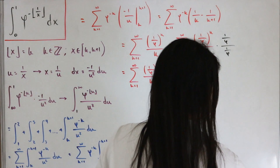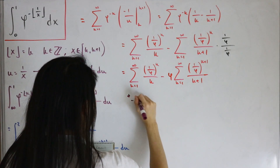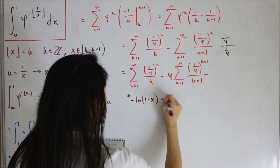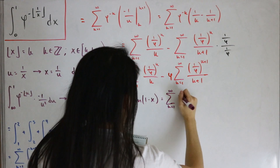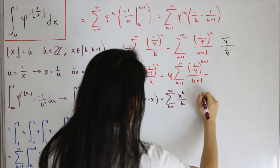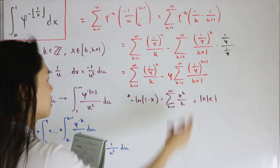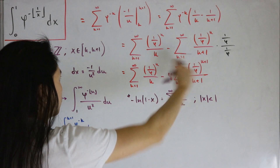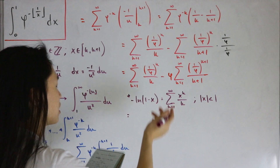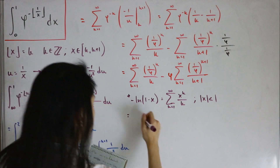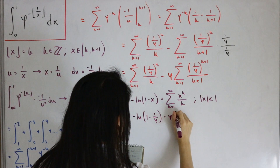The Taylor series we'll use is: -ln(1-x) = the infinite sum from k=1 to infinity of x^k / k, valid for |x| < 1. The input 1/φ does satisfy |1/φ| < 1, so we can apply this. The first sum becomes -ln(1 - 1/φ), and the second sum's series component is -ln(1 - 1/φ) as well, multiplied by φ.